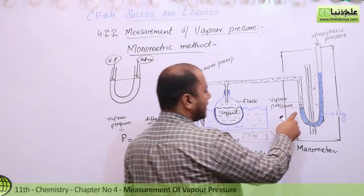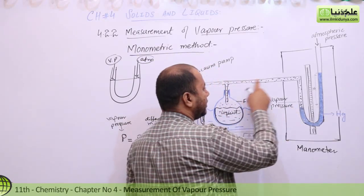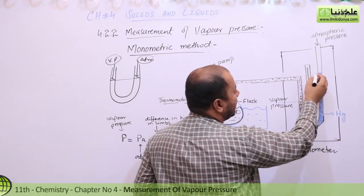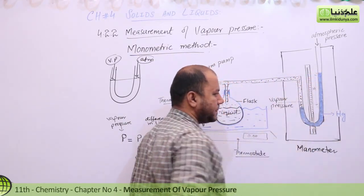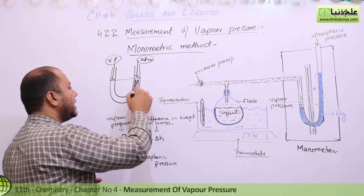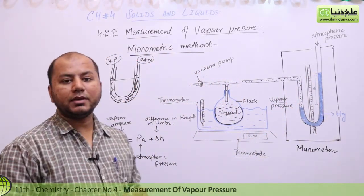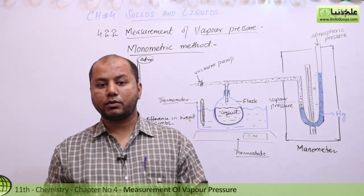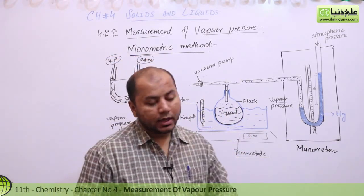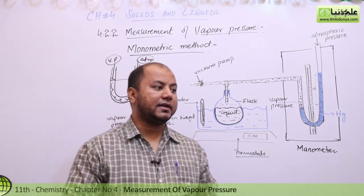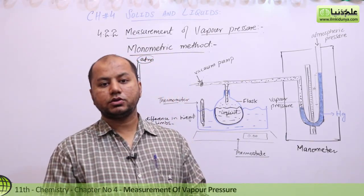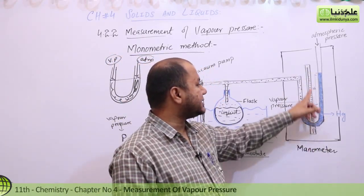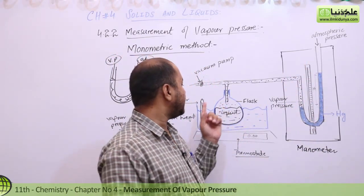Let's say you have produced vapors by heating, and those vapors are pushing the mercury downward. If both mercury levels are equal — as I showed you here — then you can say that the vapor pressure has become equal to atmospheric pressure. Otherwise, if you want the vapor pressure to exceed atmospheric pressure, you measure that using the scale attached here. The scale helps you determine what the pressure is at any given point, and the thermometer tells you the temperature.